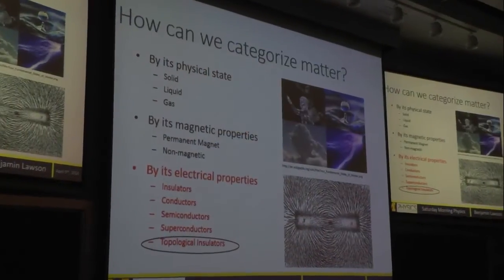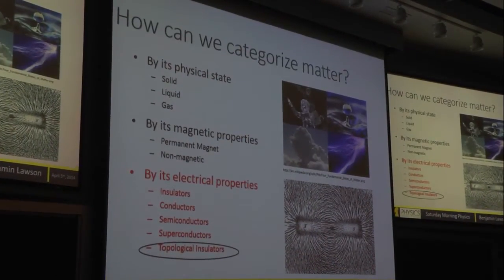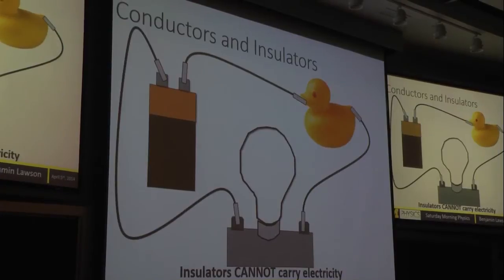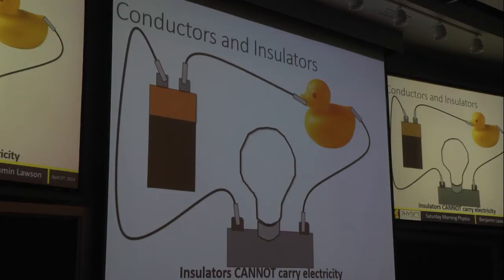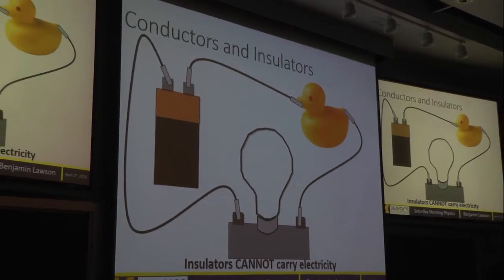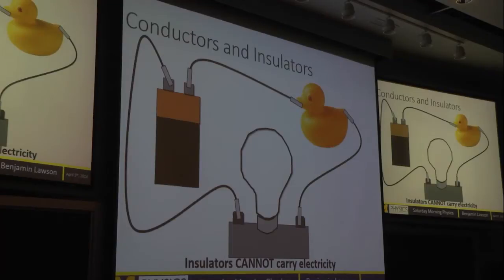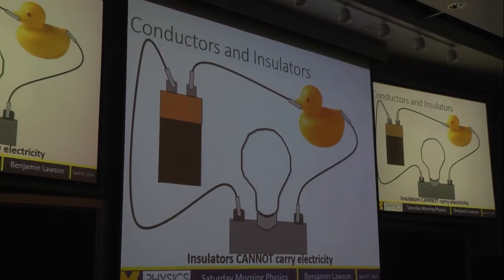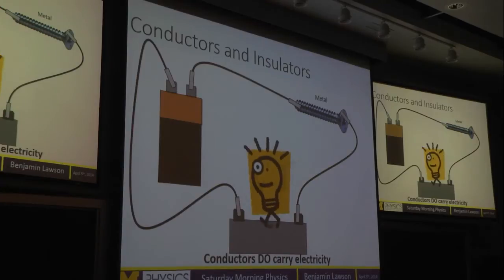In particular, I want to introduce a really new type of matter that's been recently discovered called a topological insulator. An insulator is something that cannot allow electricity to move through it. If I had this little circuit and my rubber ducky plugged in, the light bulb would not turn on because rubber is an insulator — electrons are not allowed to flow through it. But if instead I put a piece of metal there, a screw, electrons can move through that — that's a conductor — and the light bulb turns on.